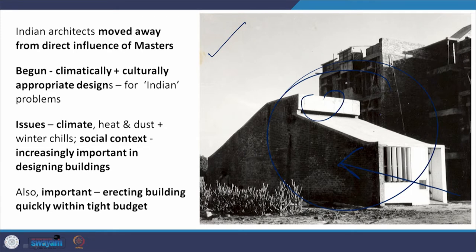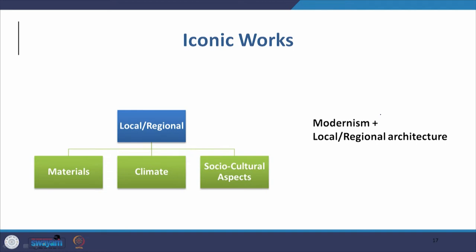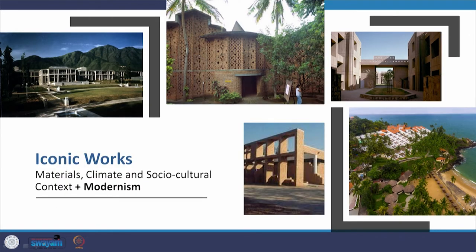It was also important to erect buildings within a tight budget — a very typical Indian constraint, particularly in the 1970s and 1980s. Iconic works built by that generation combined modernism with local and regional architecture, connected through materials, climate, and socio-cultural aspects — in many cases all of them together. Some of these works include Joseph Allen Stein's work in Kashmir, Laurie Baker's work in Kerala, Raj Rewal's Asian Games housing, Charles Correa's Kovalam Beach Resort, and the brisole of Jodhpur University by U.C. Jain.